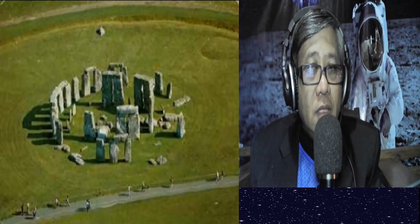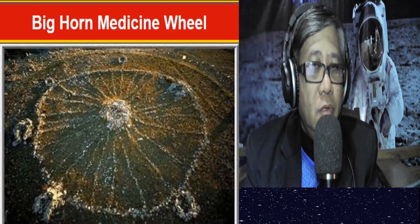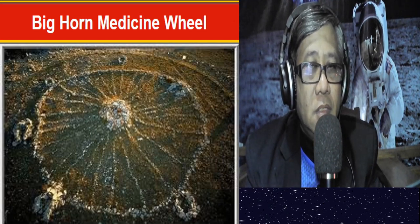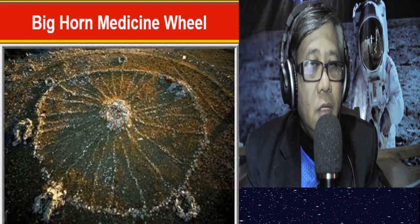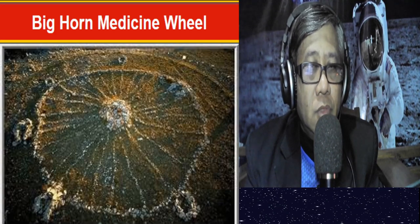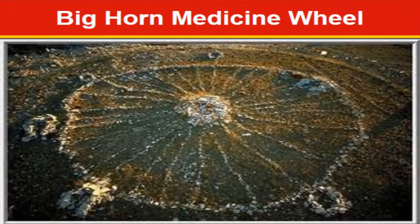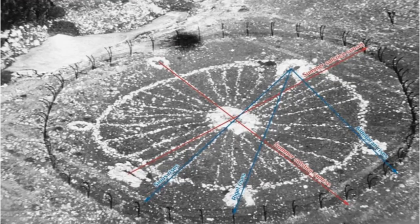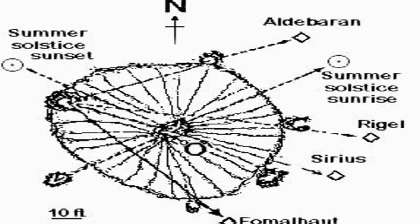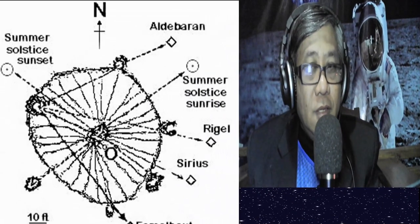Another example of an ancient observatory is the Bighorn Medicine Wheel in the United States. The markings on the ground resemble the spokes of a wheel, and those markings are aligned to certain stars like Aldebaran, Rigel, and Sirius. The Bighorn Medicine Wheel was used to mark the movements of the sun, the moon, and the stars, and to predict winter and summer solstices.